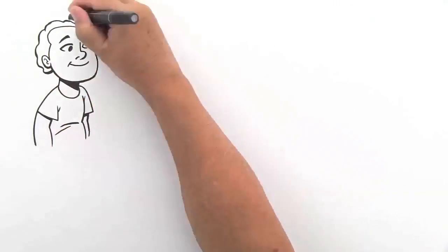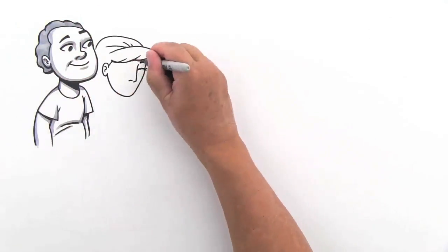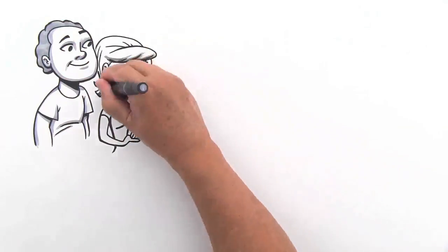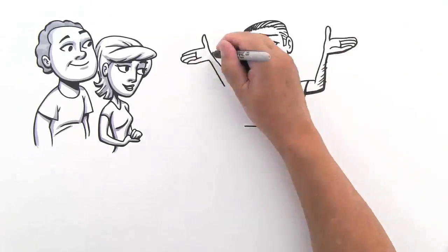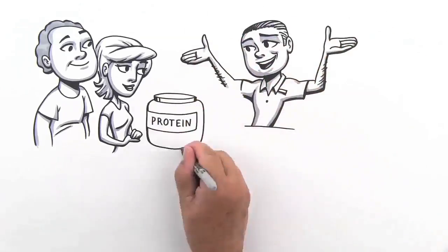Meet our friends Tom and Cindy. Tom wants to lose weight and build muscle. Cindy wants to eat and feel healthier. They went to a health food store where they were told they needed more protein and given huge tubs of protein powder.